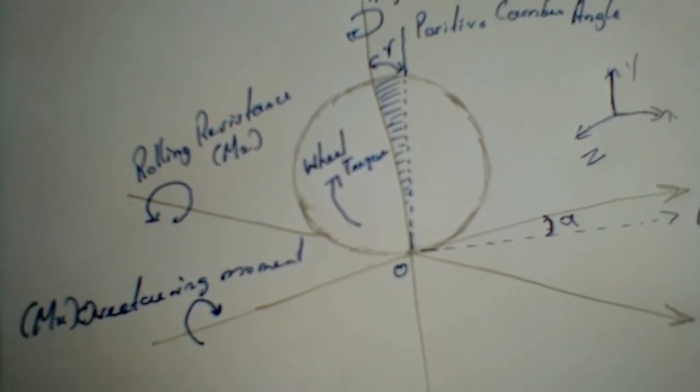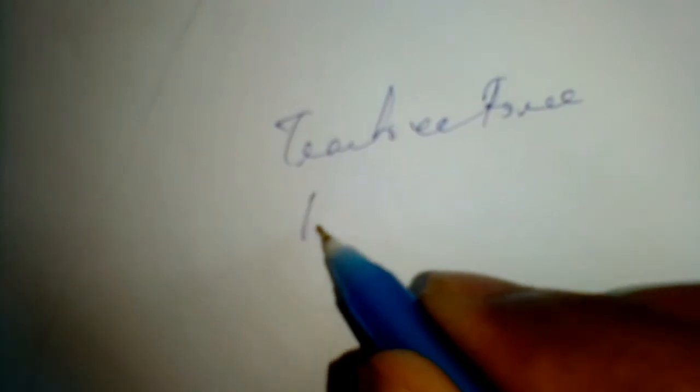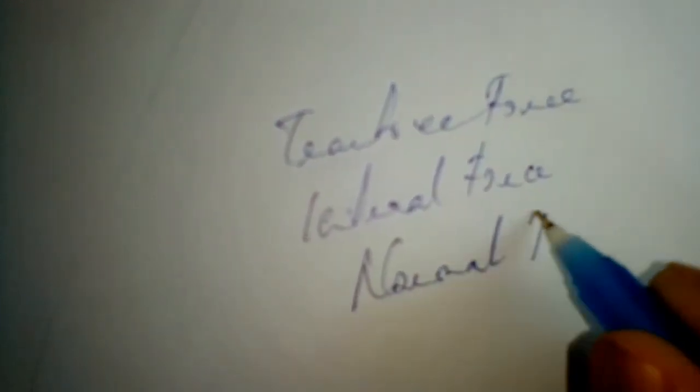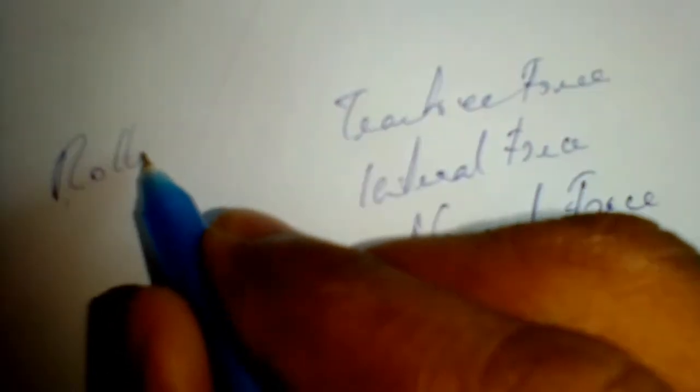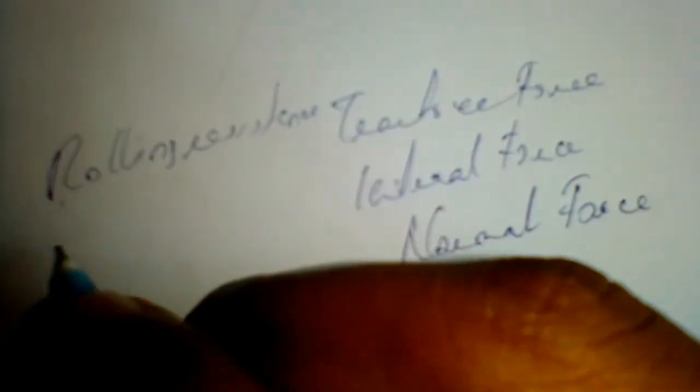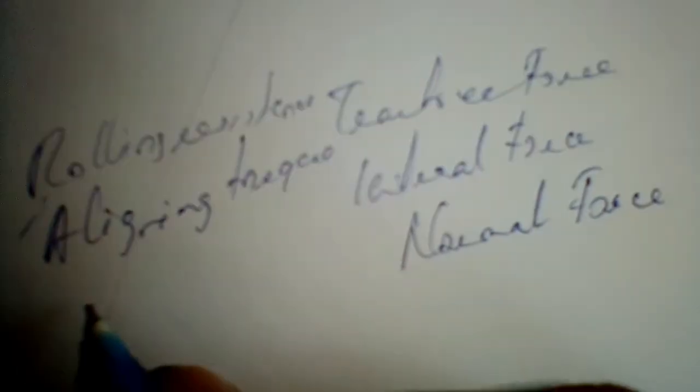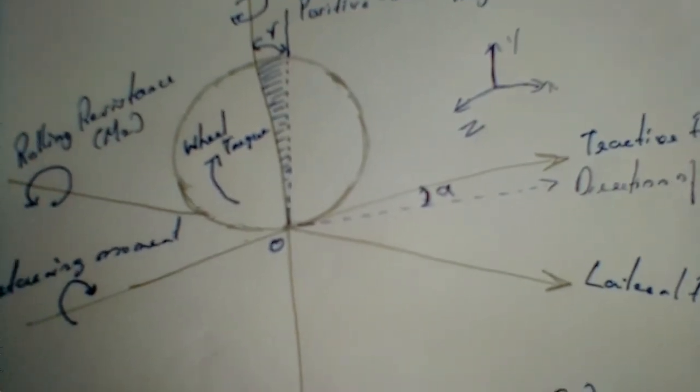To summarize the forces and moments acting on a tire: the three forces are the tractive force in the X-axis, the lateral force in the Z-axis, and the normal force in the Y-axis. The three moments are the rolling resistance in the Z-axis, the aligning torque in the Y-axis, and the overturning couple in the X-axis.